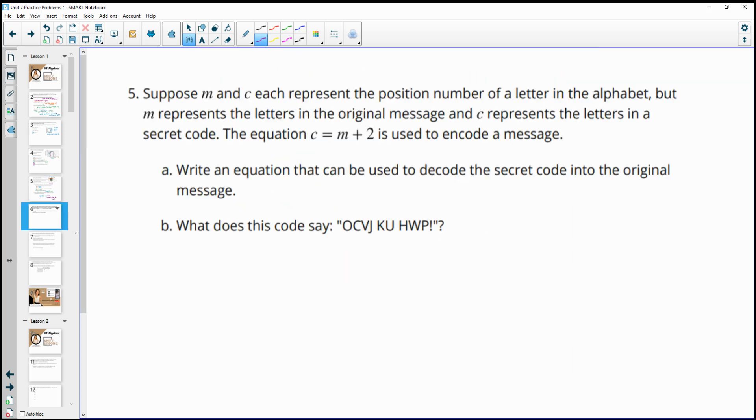Number five, suppose M and C each represent the position number of a letter in the alphabet. But M represents the letters in the original message, and C represents the letters in a secret code. The equation C equals M plus 2 is an encoded message. Write an equation that can be used to decode. So do this backwards. So we would just want to do the inverse. So we'd want to take the letter in the new word and subtract 2. So the code minus 2 to go backwards.